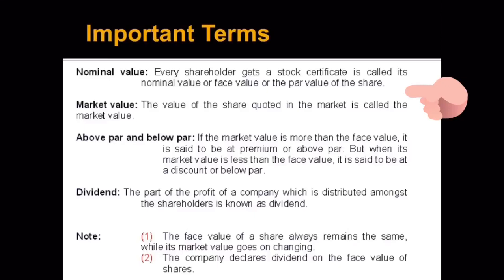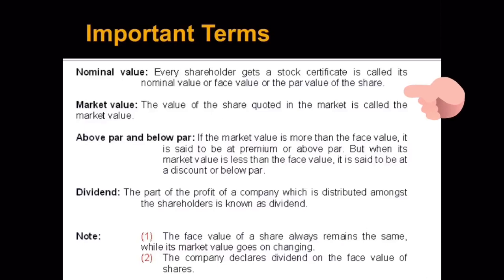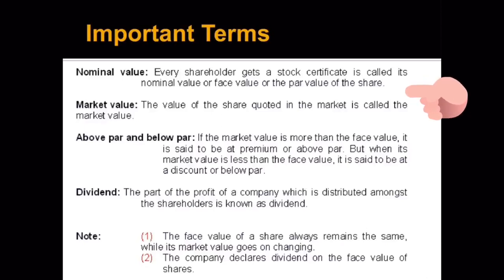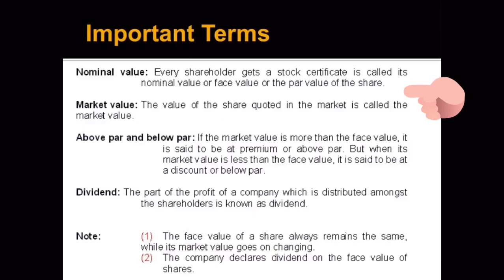Each of them contributes rupees 5, so 5 into 10 gives you 50, making 50 the total investment. The 5 rupees paid by each person is termed the face value or the nominal value. Here each person is contributing capital, so each person is termed a shareholder having one share each.